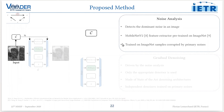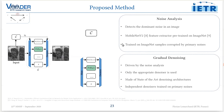The feature extractor is the one from MobileNet V2 pre-trained on ImageNet. We retrained using fine-tuning both the classification head and the feature extractor, using ImageNet samples corrupted by primary noise. The gradual denoising block, driven by the classification, fires only the appropriate denoiser according to the classification predictions. It is made of state-of-the-art denoising architectures dedicated to primary noise.